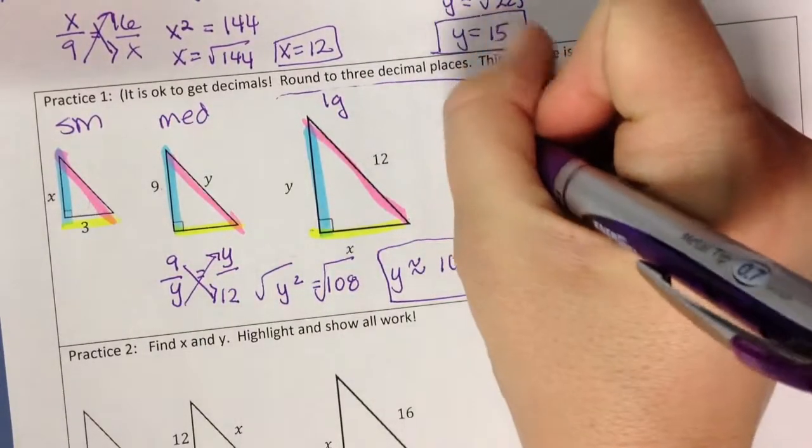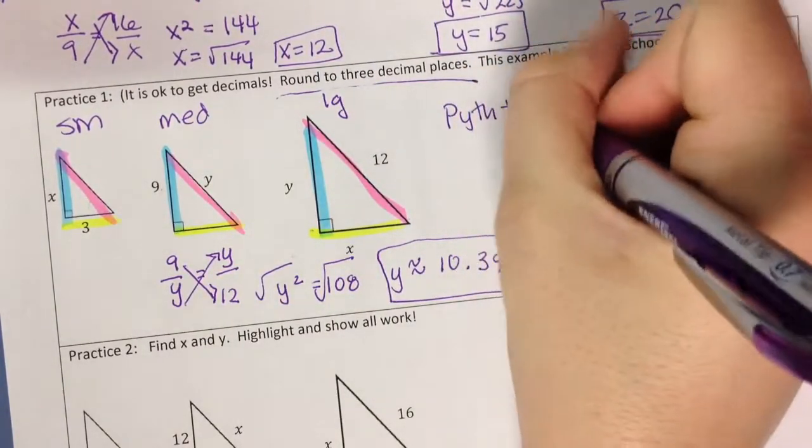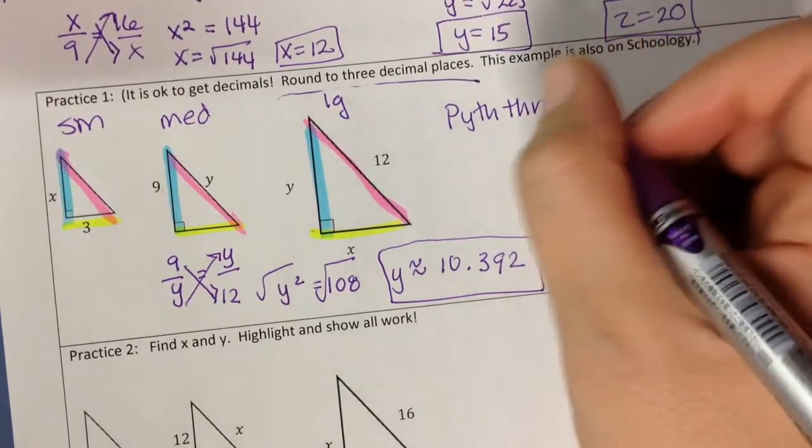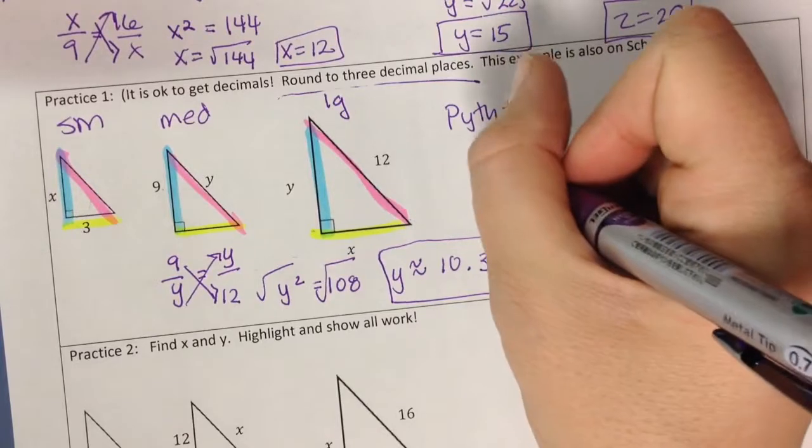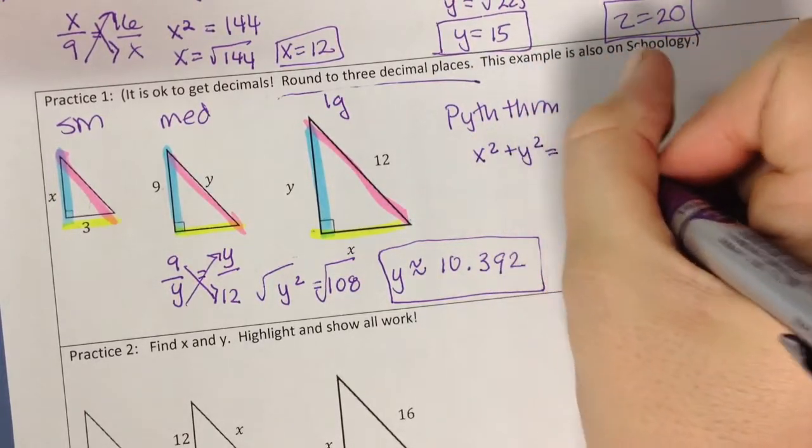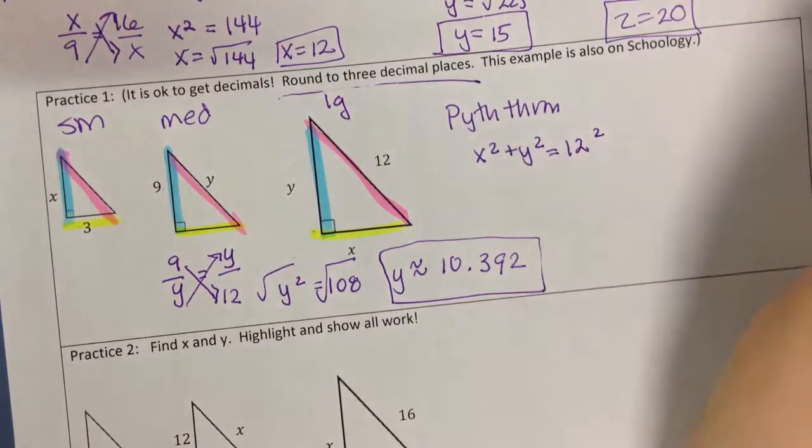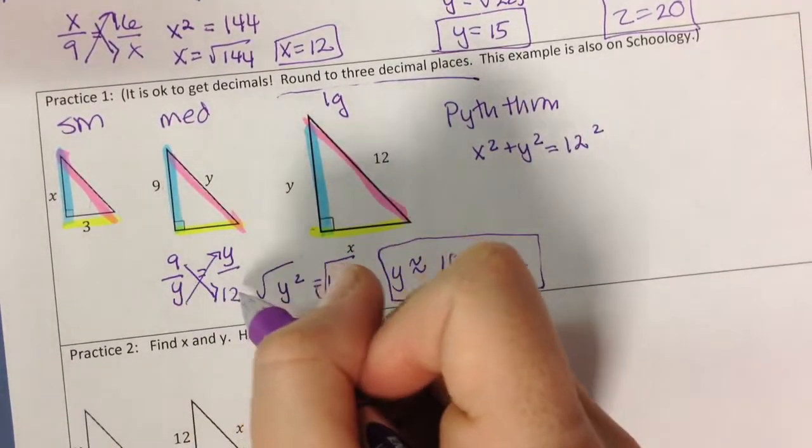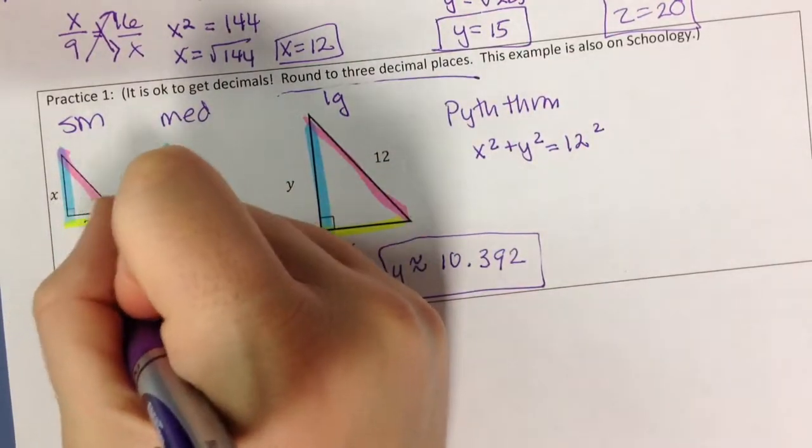So for the Pythagorean theorem, I could say that x squared plus y squared equals 12 squared. I'm trying to find x. And then I already know what y squared is because over here we found that y squared is 108.